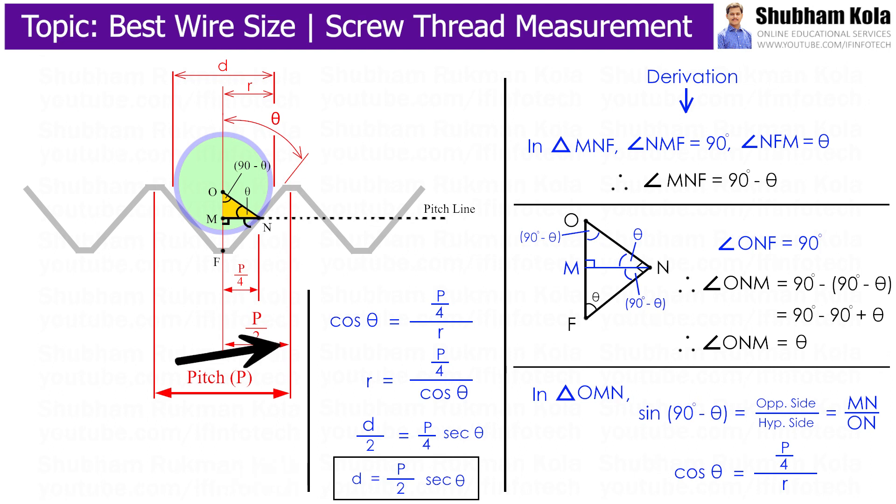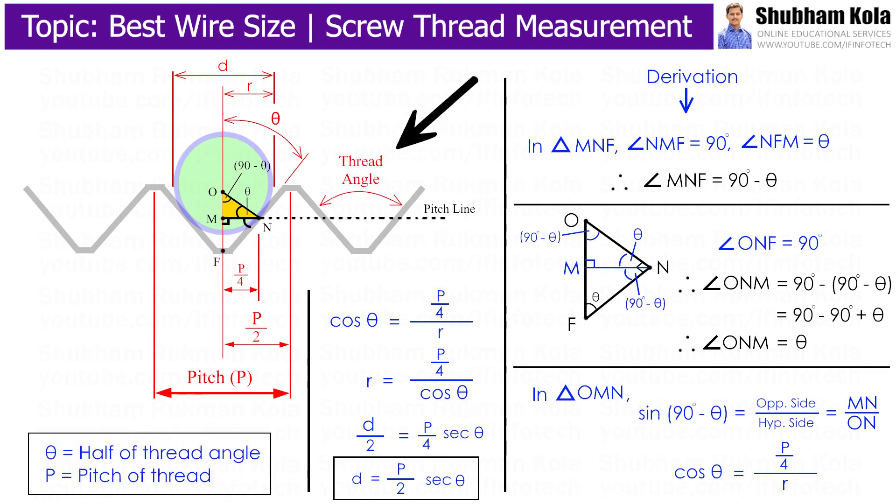So this small d indicates best wire size which we are going to place in V-groove of thread workpiece. Here theta is half of thread angle, and P should be known to us. Once these values are known, we can find the best wire size.